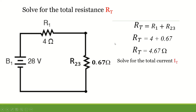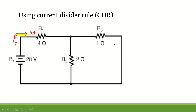Then we can solve for the total current. From Ohm's law, total current equals total voltage divided by total resistance, which is 28 volts divided by 4.67 ohms, and we will get 6 amperes. These 6 amperes flow through resistor 1, which is also equal to I1. When I1 enters the node, it divides into two currents: I2, the current flowing in resistor 2, and I3, the current flowing in resistor 3.